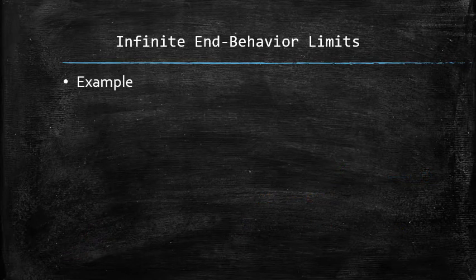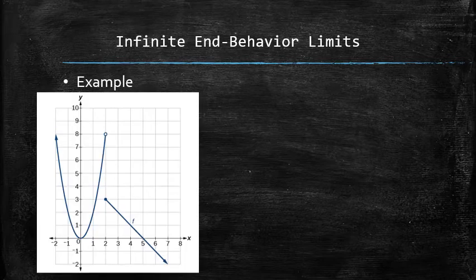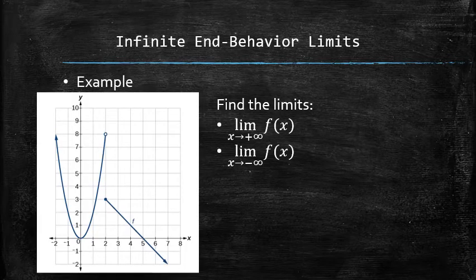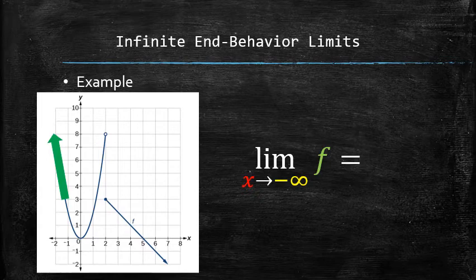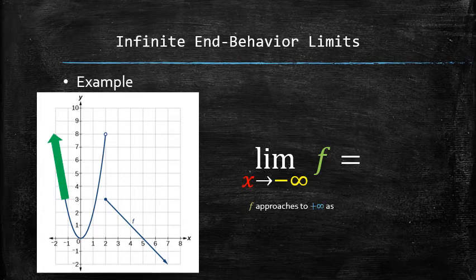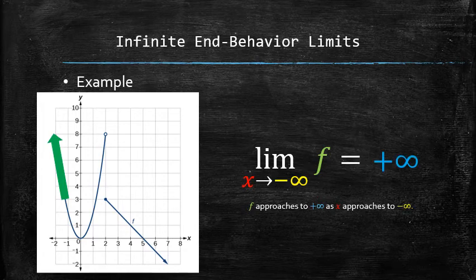Let's do an example. Consider a function defined by the following graph and let's find the following limits — in other words, let's describe the non-asymptotic end behavior of the graph. To find the non-asymptotic end-behavior limit on the left, we need to determine whether the graph increases or decreases indefinitely as x approaches negative infinity. It is easy to see that the function goes up — f approaches positive infinity as x approaches negative infinity. Therefore, the answer is positive infinity.